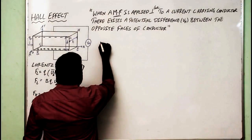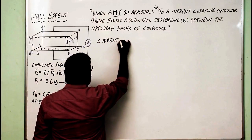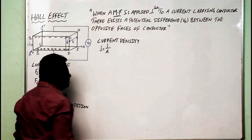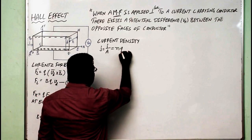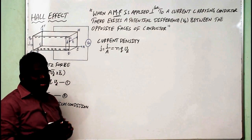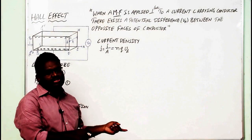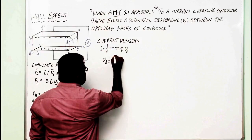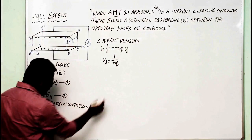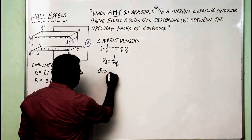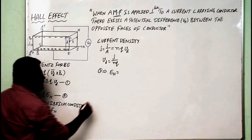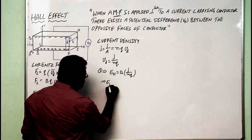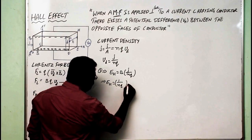As we know, the current density J is defined as current per unit area, and in terms of drift velocity it is given as J equals N·Q·V_D, where N stands for number of charge carriers and Q is the charge — negative for electrons and positive for holes. We can write V_D as J divided by N·Q. Substituting this value of V_D into equation 1, E_H equals B times J divided by N·Q, which implies E_H equals (1/NQ)·J·B.